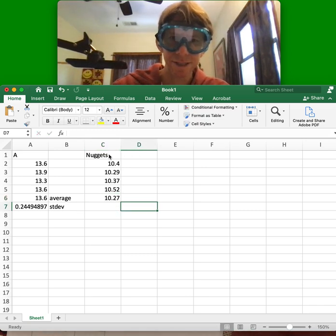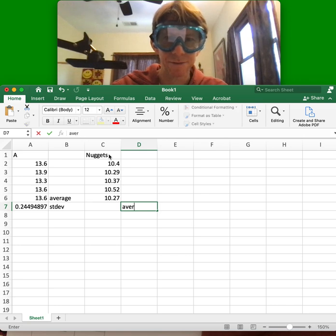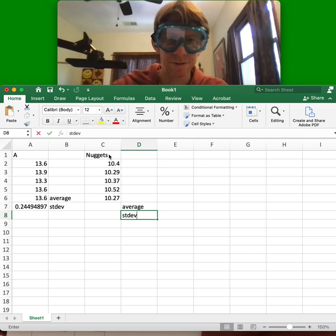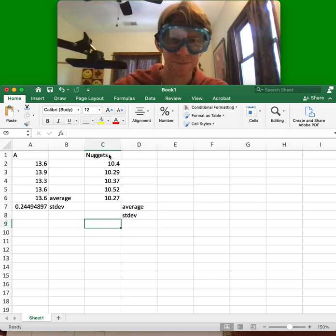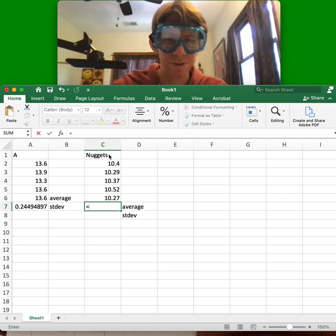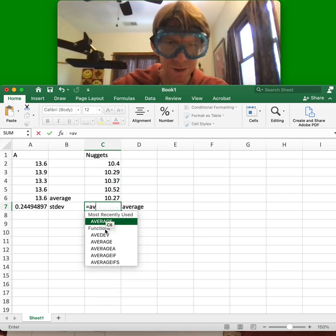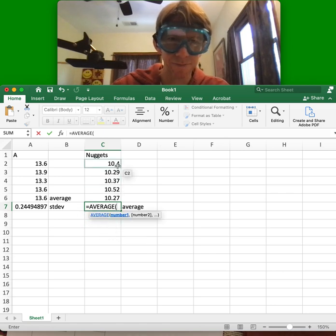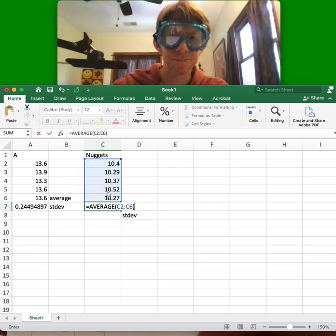And now, this time, this will be my average. And below, it will be the standard deviation. And my average, remember, is equals AV. Then it should appear. If not, you can type out average as well. Click and drag over all of your values. Close the parentheses. Hit Enter.